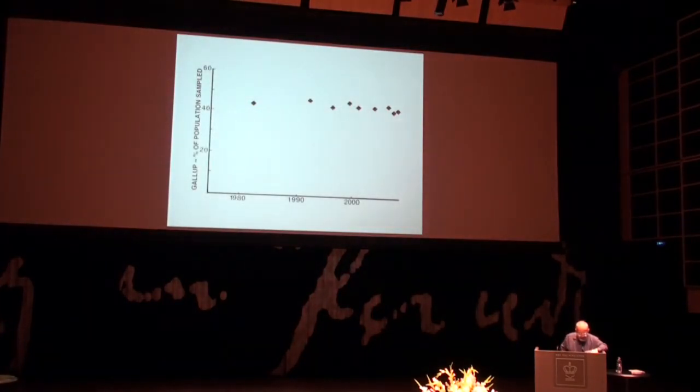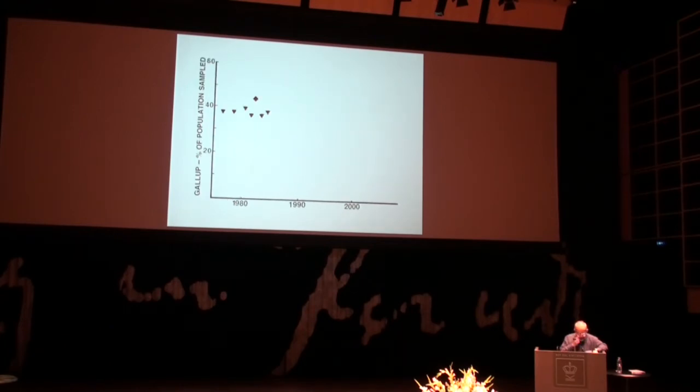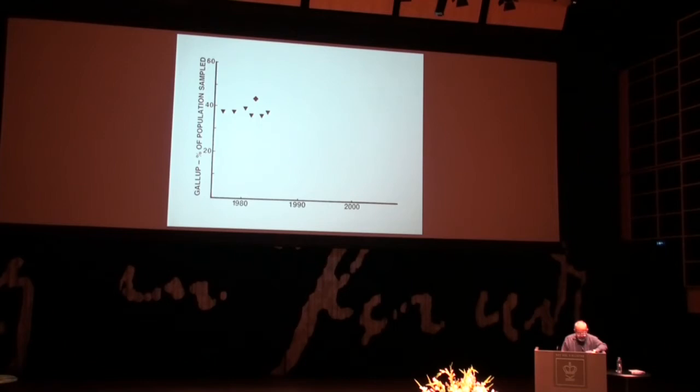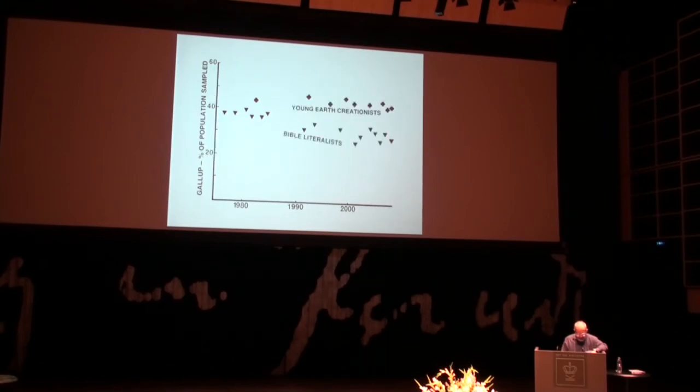This is the standard Gallup data. They've been the only long-term sample since 1980. It's been steady. This is support that humans are created within 10,000 years by God, basically the fundamentalist view. And it's been steady at about 43 to 47%, although it's not going up and it may be starting to edge down. Notice the dot, I mean the diamond on the left, that's the 1980 sample. That's that same diamond there. Below that are Bible literalists. Do you take the Bible to be literally the word of God, word for word? Again, Gallup asked this, and they're fairly similar, which makes sense.